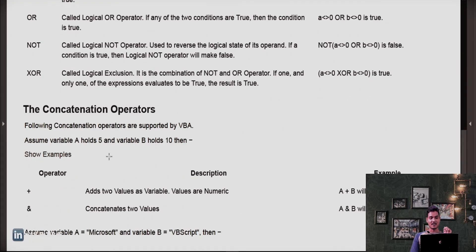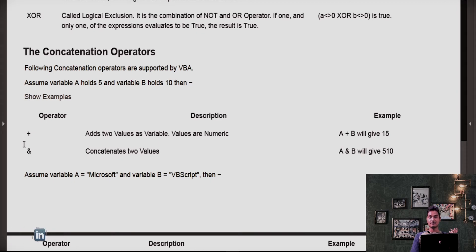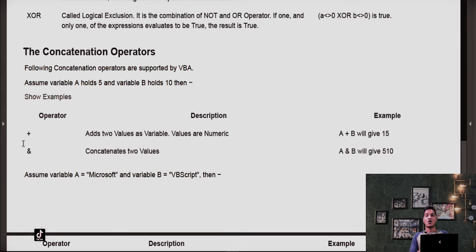Now let's discuss concatenation operators. There are two: plus and ampersand (&). We take A as 5 and B as 10. The plus operation gives 5 plus 10 equals 15. The ampersand operator does not change the values — it puts both variables together, so A & B gives 510. When operating on numbers, plus and ampersand give different results.